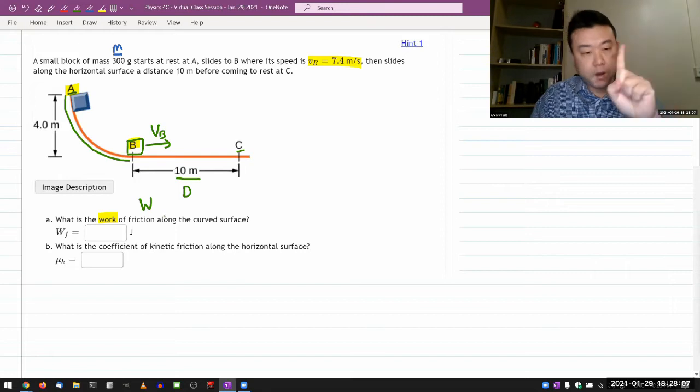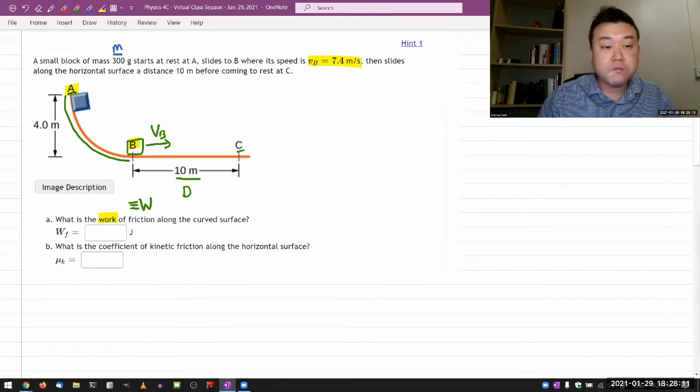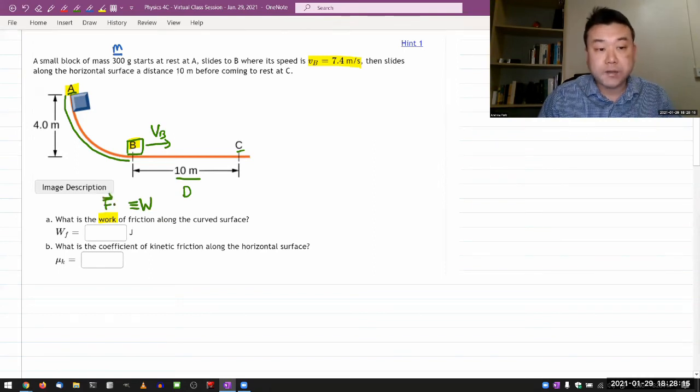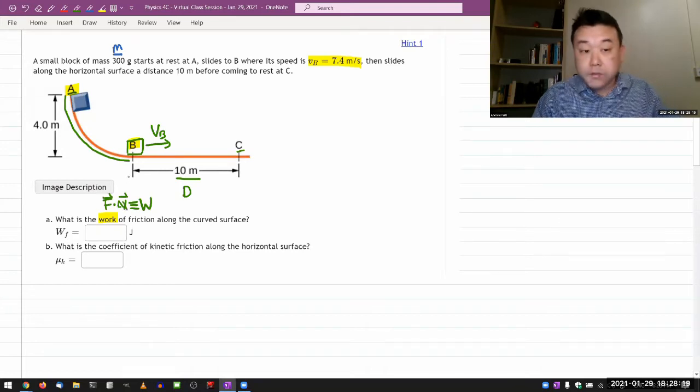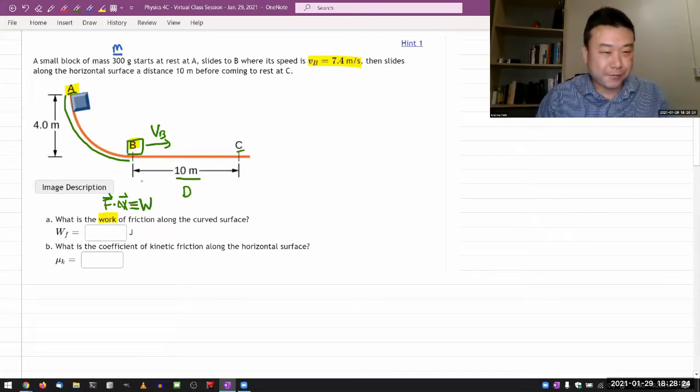There are really two key things that you should remember about work. It can be described one through its definition. In physics 4A, we define the work as force dot product, inner product with displacement. That's one way to describe work. And if that's all you remember, looking at this, there's nothing you can do.